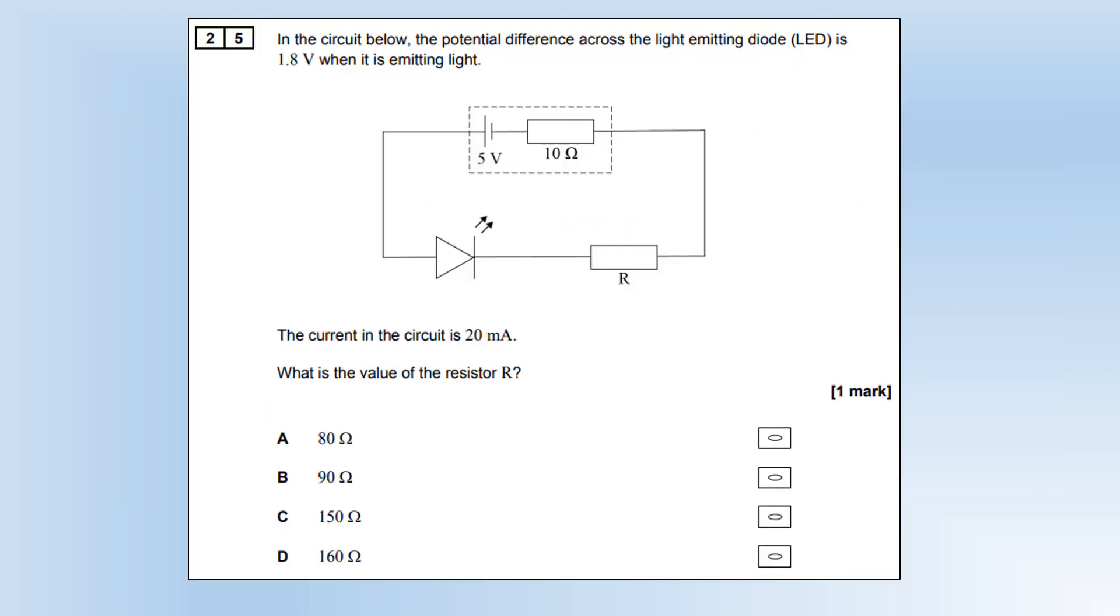In the circuit below, the potential difference across the LED is 1.8 volts when it's emitting light. The current is 20 milliamps. What is the value of the resistor R? First I figured out what the potential difference across the two resistors is, which is 3.2. Then I figured out what the total resistance is using that potential difference and current. Then we subtract the internal resistance of 10, giving us 150 ohms.